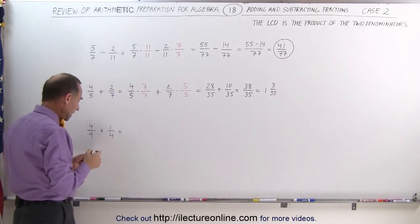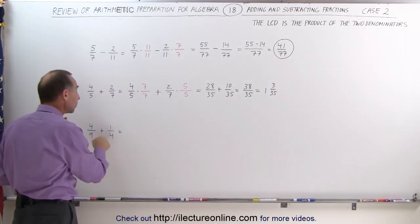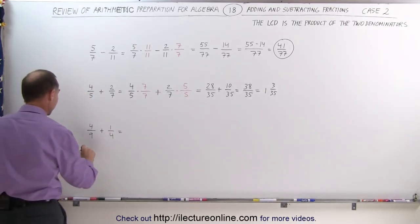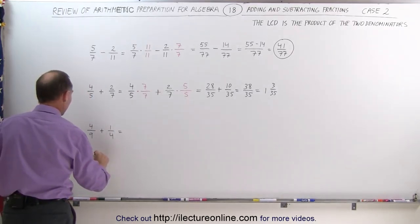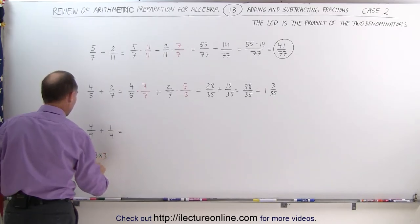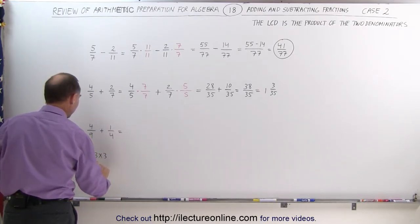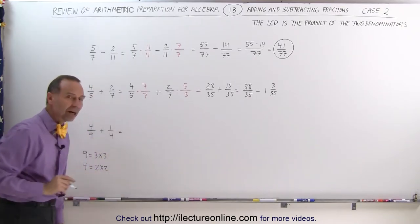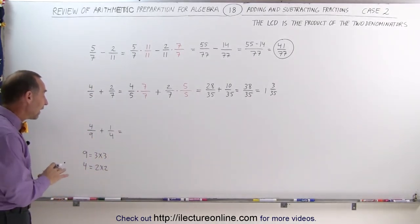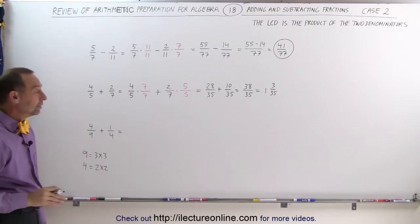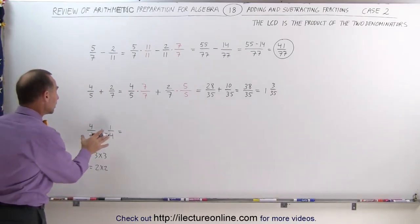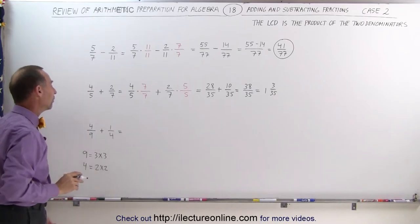Finally, for this last example — even though nine and four are not prime numbers, when you write nine as the product of its factors, three times three, and four as the product of its factors, two times two, they have no factors in common. Because of that, the lowest common denominator can only be the product of the two. So you treat this exactly the same as the previous examples.